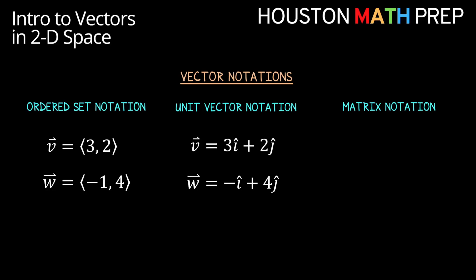One notation for vectors that's used a bit more in calculus and physics is the unit vector notation. This notation writes the vector path as a combination of unit vectors that travel parallel to our coordinate axes in space.